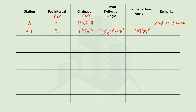In the field, the instrument may not measure exactly to the second, so we can round off to the nearest value depending on the least count of the instrument. For example, if the instrument measures to 10 seconds, we round accordingly. For these calculations, we assume a least count of one second to illustrate the method.